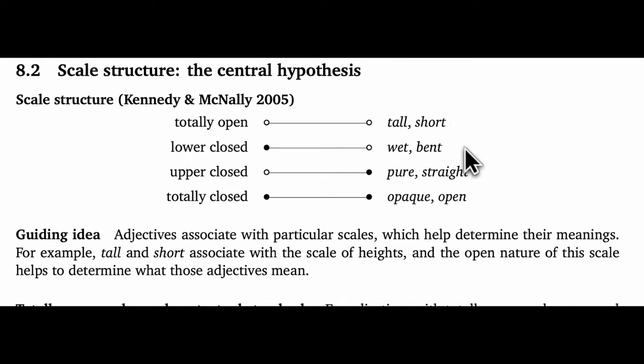The scale for them is a scale of heights, and these adjectives, as we say, associate with that scale. The lower closed scales are closed at just one end, the lower end. Two adjectives that associate with such scales are wet and bent. For wet, the scale is something like a scale of saturation, and the idea here is that having even a little bit of water puts you on that scale, and then you can be arbitrarily saturated, no upper bound. Similarly, for bent, the scale is measuring the angles or something, and to be a little bit bent is to be bent, and then there's no maximal amount of bending.